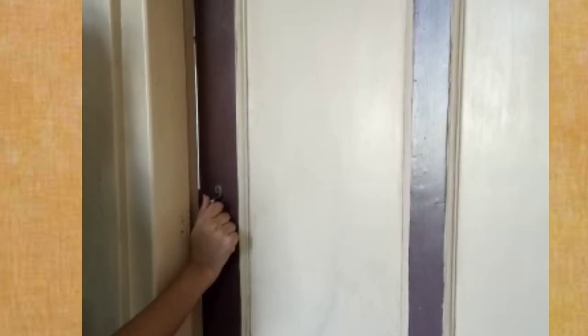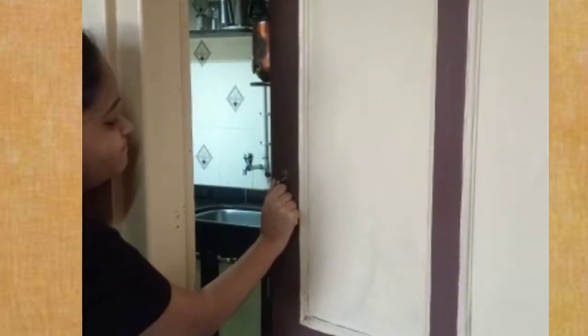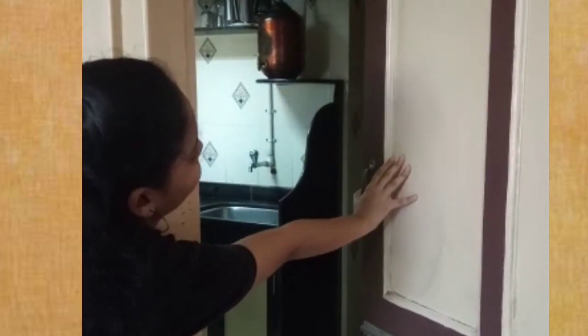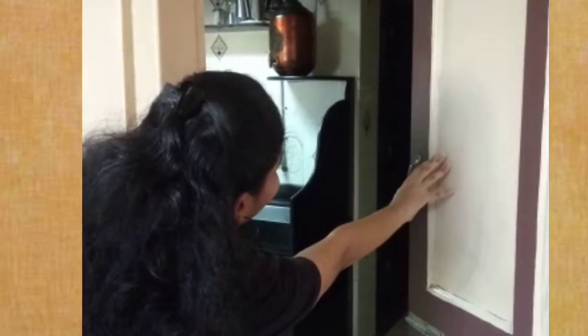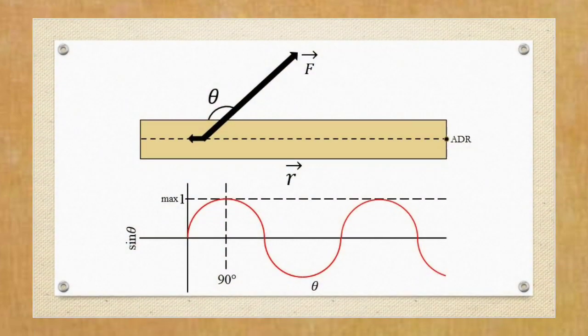Now, let's consider the possibility of opening the door from an angle which is not 90 degrees. When we try to open a door from any angle that is not 90 degrees, the sin of that angle will be less than sin of 90 degrees, because sin of 90 degrees gives the maximum value of sin. So in this case, the torque will be less.